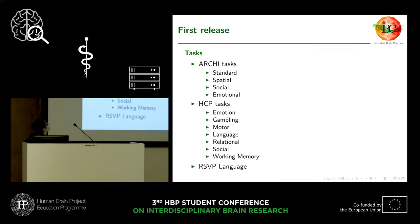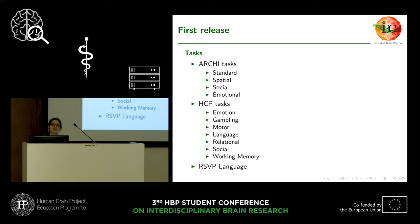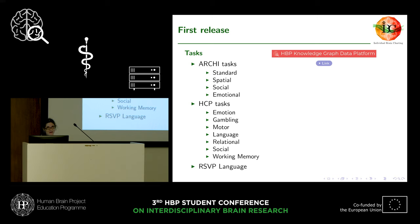The first release is already out. It comprises 12 different tasks. The RSI tasks and the HCP tasks are already reproduced from previous studies — the HCP task stands for the Human Connectome Project Battery of Tasks. All of these tasks cover a wide range of psychological domains, going from low-level to high-level cognitive processes. The first release is available in the HPP Knowledge Graph and also on OpenNeuro, under data accession number 244.